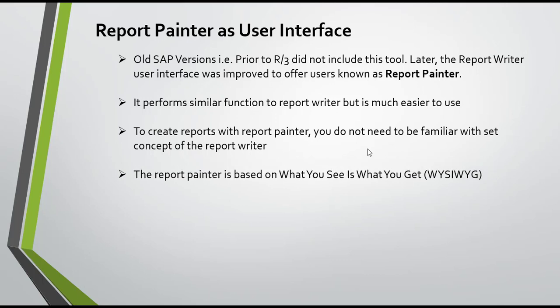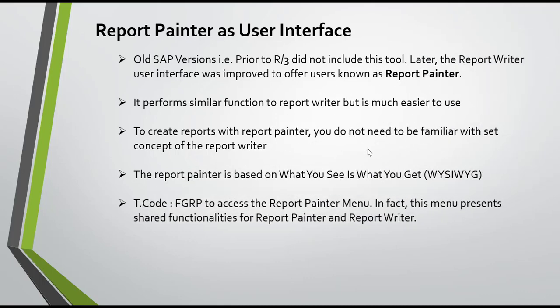The Report Painter is based on a WYSIWYG — What You See Is What You Get — principle. When you design the rows and columns, what you design is exactly what you will see when executing the report. The transaction code FGRP is used to access the Report Painter menu, which represents shared functionality for both Report Painter and Report Writer.